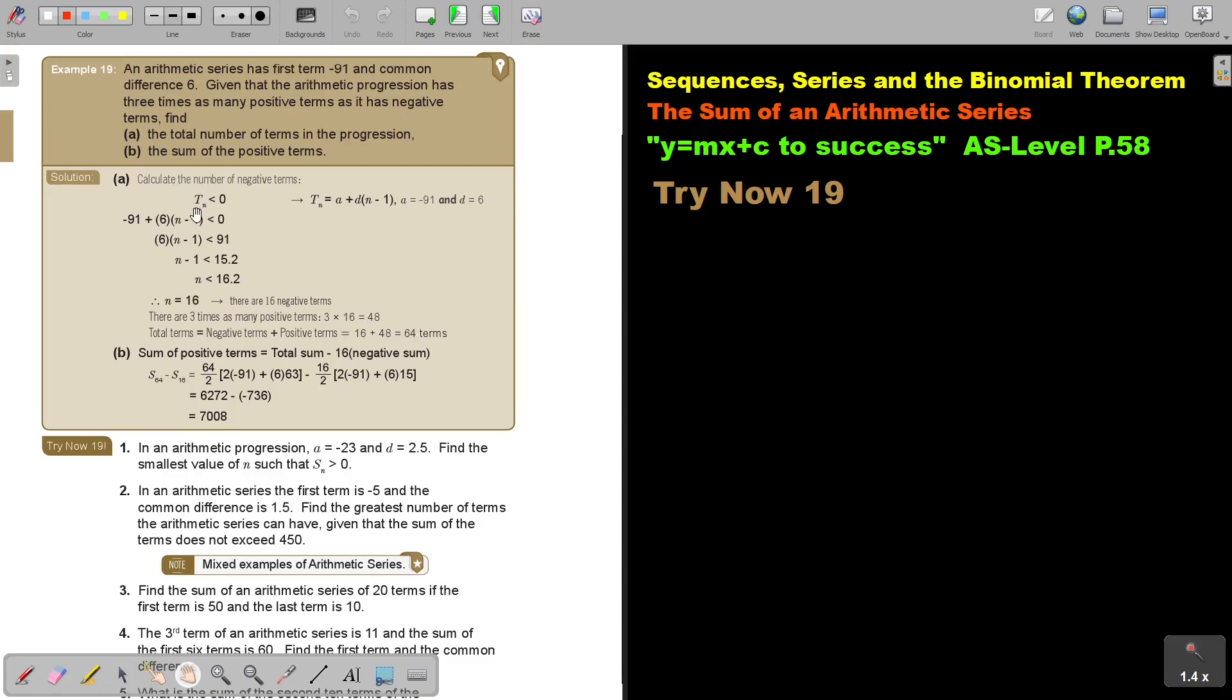Wow! Interesting sum. The sum of the positive terms is the total sum minus the negative sum. The total sum is 64, the negative is 16. If we subtract that, we get 7008.